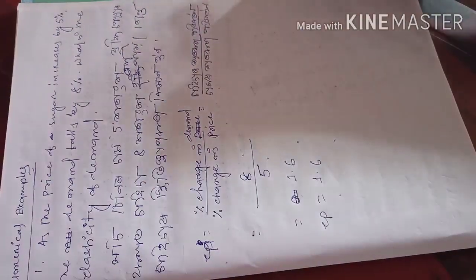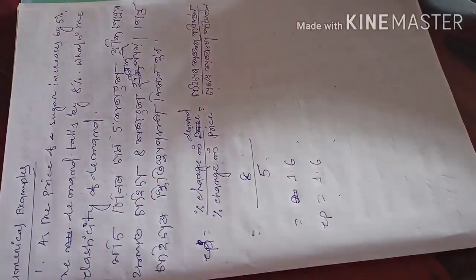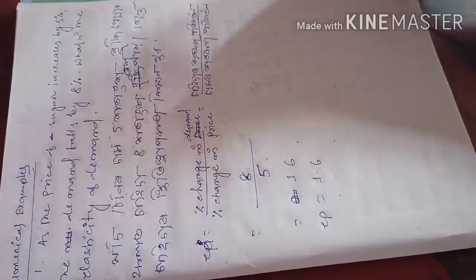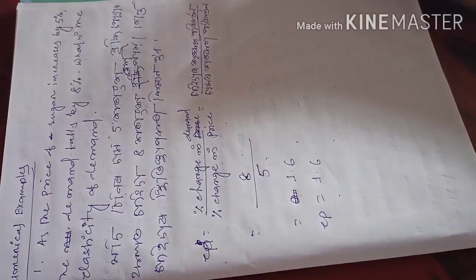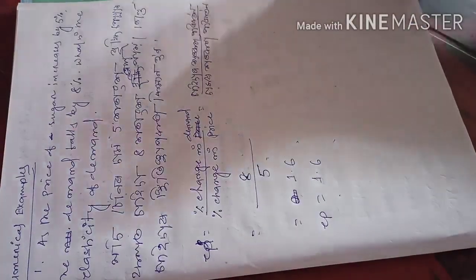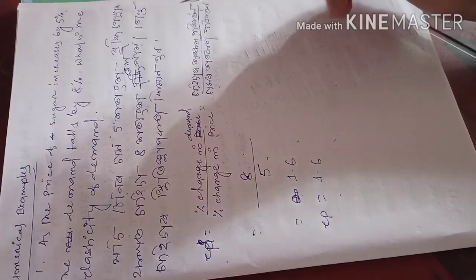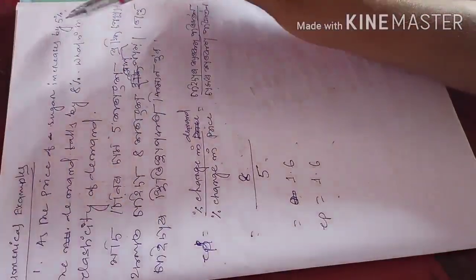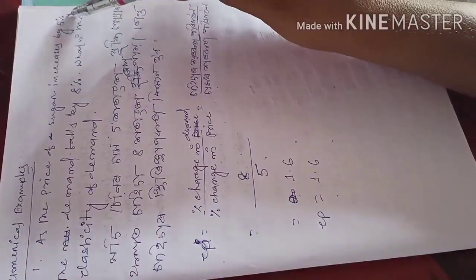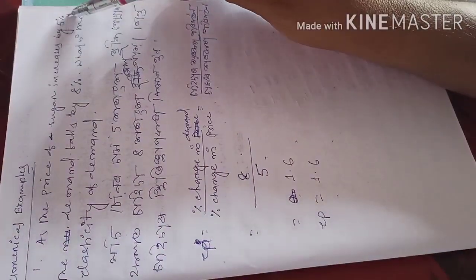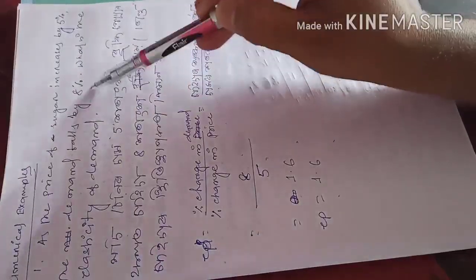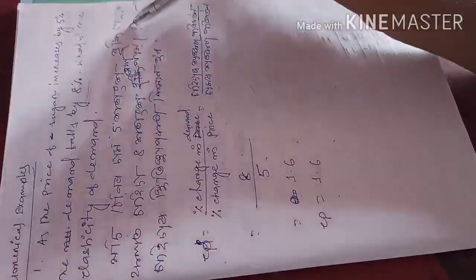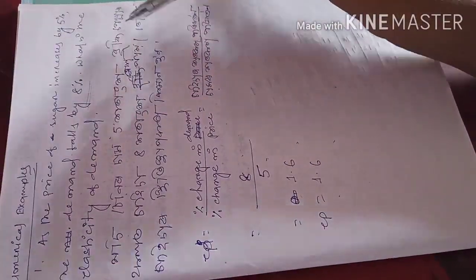In the next videos, we will discuss more numerical problems related to elasticity of demand. To summarize: if the price of sugar increases by 5 percent and its demand falls by 8 percent, applying the formula — percentage change in demand divided by percentage change in price — gives us 8 by 5, which equals 1.6.